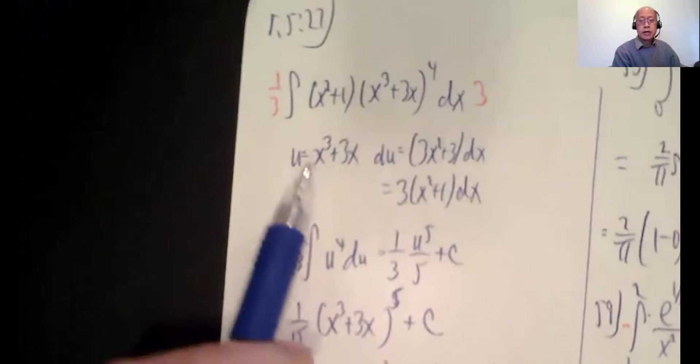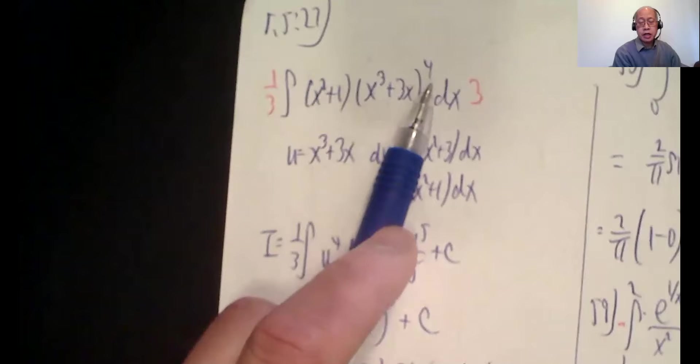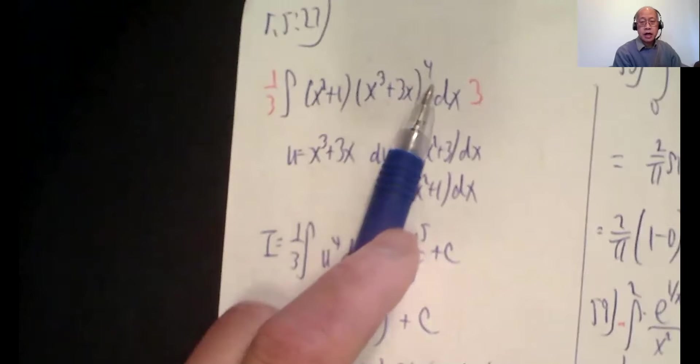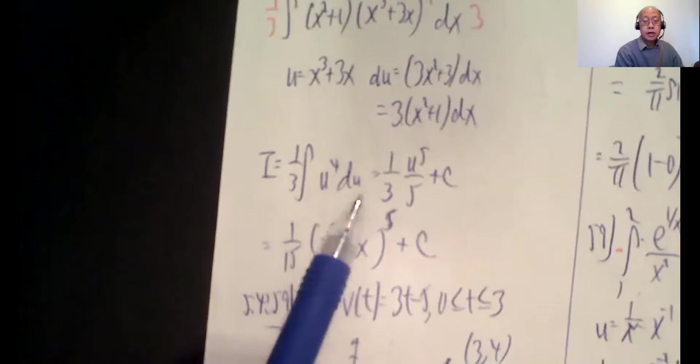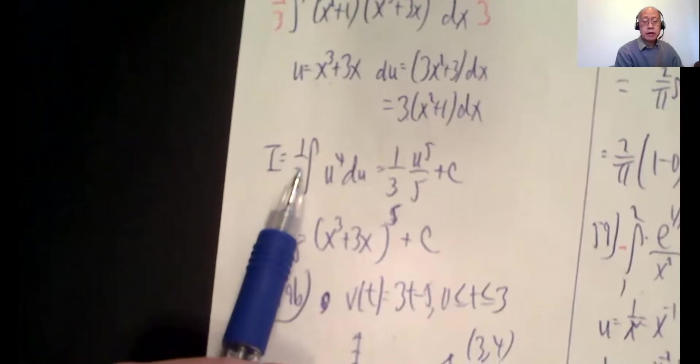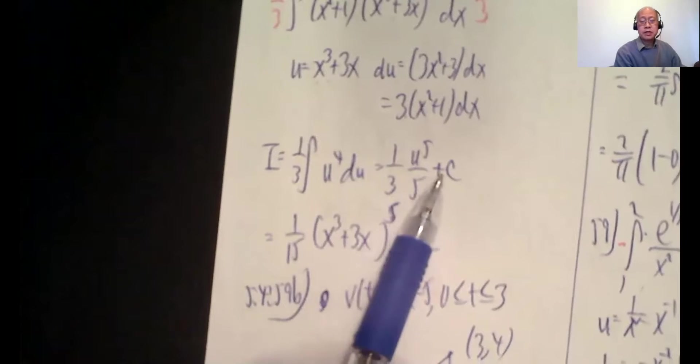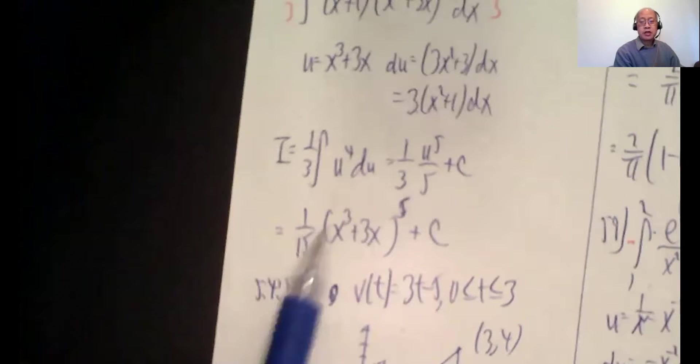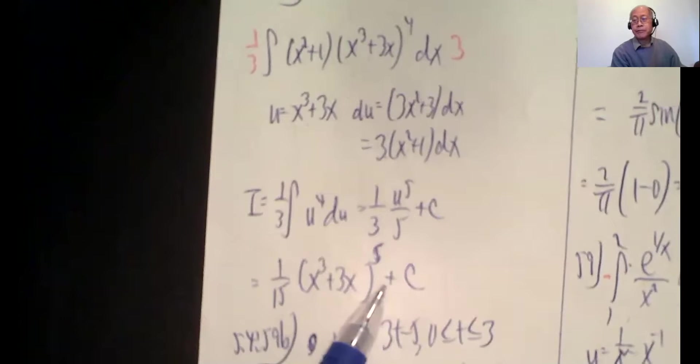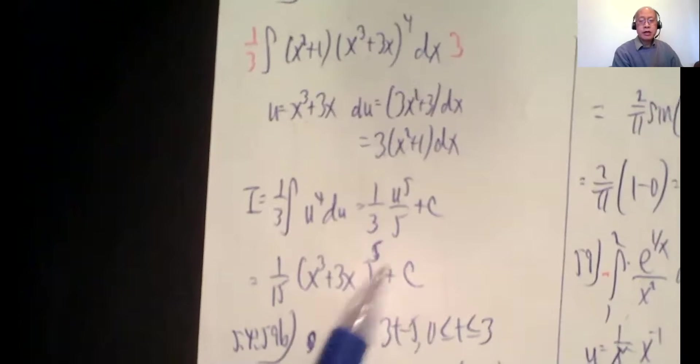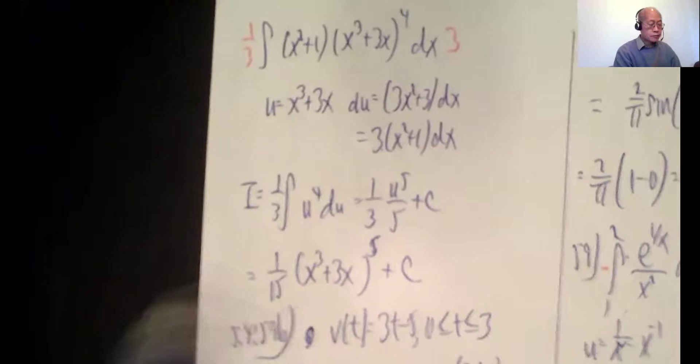Quick word of caution. Let u be x cubed plus 3x. Don't let it be x cubed plus 3x to the fourth power. Then you'd have to do the chain rule and it gets much messier. I'm going to end up integrating u to the fourth. That's no big deal. That's easy. It's an indefinite integral. That means your answer is blah blah blah plus c. One-third, u to the fifth over 5 plus c. Final answer, one-fifteenth change you back. x cubed plus 3x to the fifth power plus c. And if you want to double check that, take the derivative of this. See if you get this thing back.